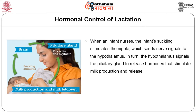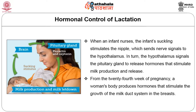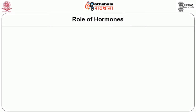The figure clearly shows how hormone controls lactation. When an infant nurses, the infant's suckling stimulates the nipple, which sends nerve signals to the hypothalamus. In turn, the hypothalamus signals the pituitary gland to release hormones that stimulate milk production and release. From the 24th week of pregnancy, a woman's body produces hormones that stimulate the growth of the milk duct system in the breast. Sucking by infants initiates hormonal changes that lead to milk production and the let-down reflex which releases milk.